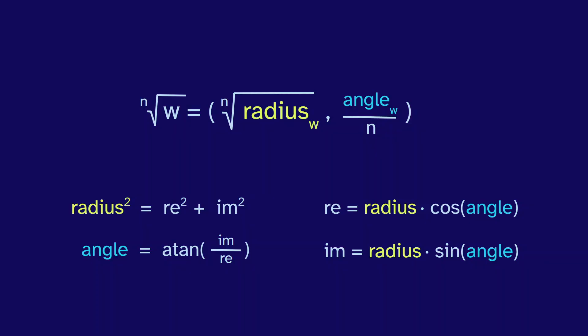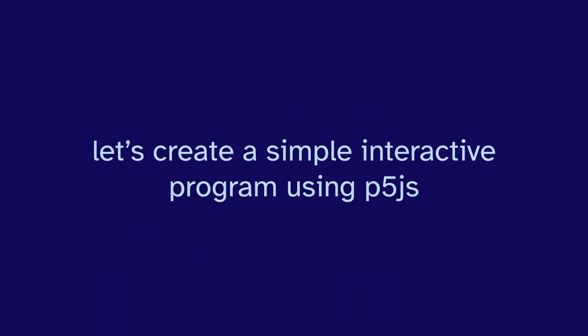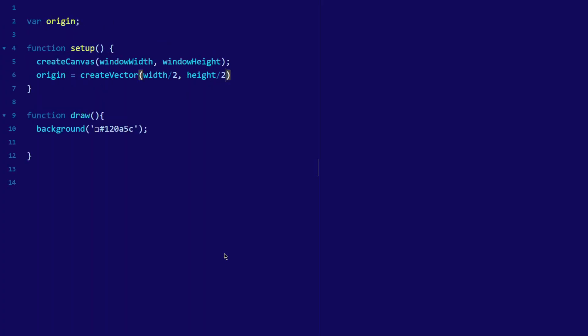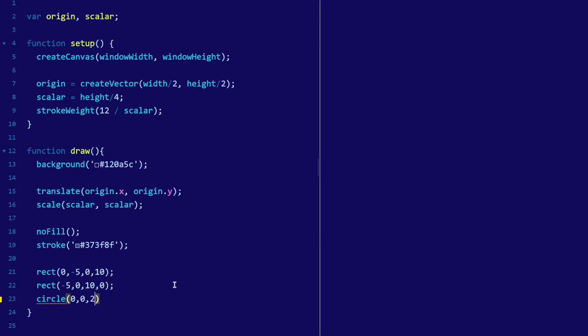Now, to apply this calculation, let's create a simple interactive program using p5.js. To start, we'll set up the window and draw a background. By default, the origin is in the upper left, so we should translate that to the middle. And the default unit is one pixel, so we should scale that to a fourth of the height. Now we can draw rectangles for axes and a unit circle.